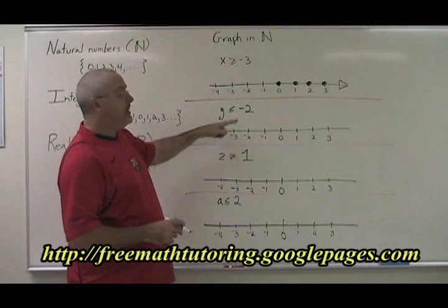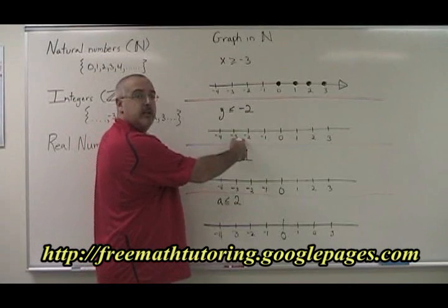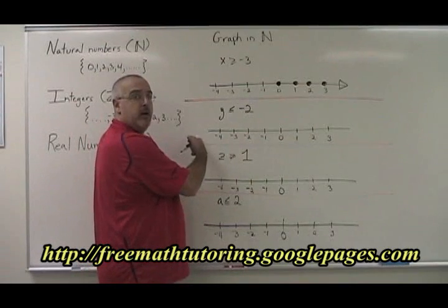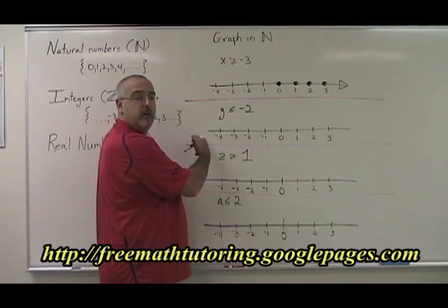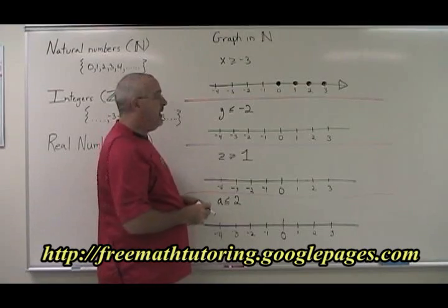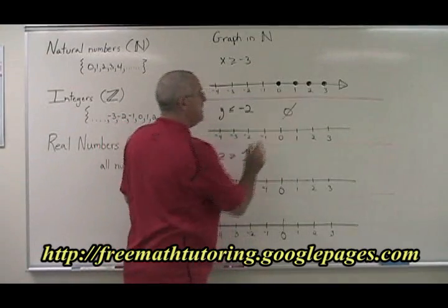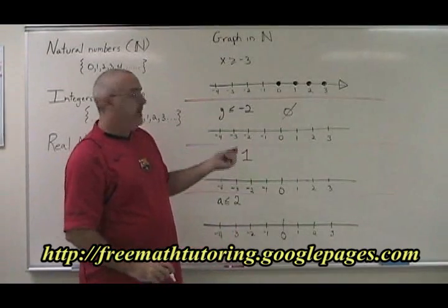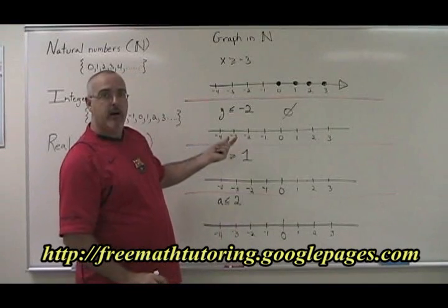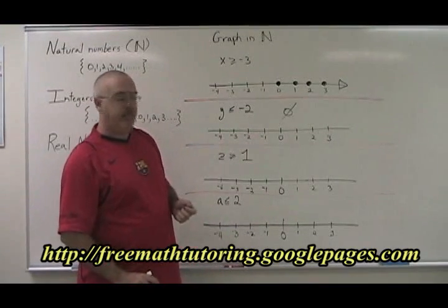y less than or equal to negative two? All the numbers less than or equal to negative two are over here, but none of the natural numbers are over here. So this is sort of a trick question as well — the answer is empty set. There is no answer. If I had to graph that on the number line, I would just give a blank number line as my answer.